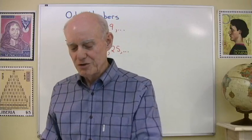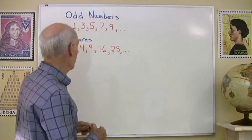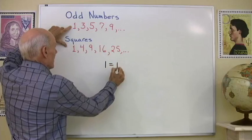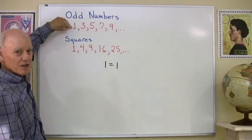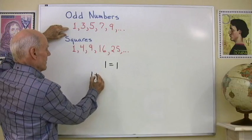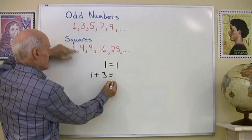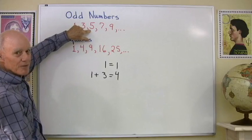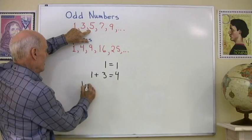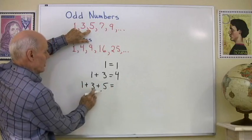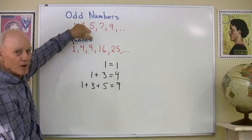So then I get to show my students here, this is what Fibonacci is talking about. He says the first square and the first odd number are the same. Then he says if to this odd number you add the second odd number, three, you get the second square, four. If to that sum you add the third odd number, namely five, you get 1 plus 3 plus 5 which is 9, you get the third square.